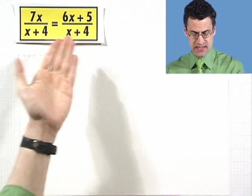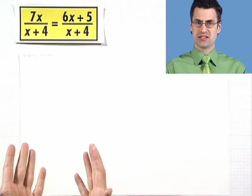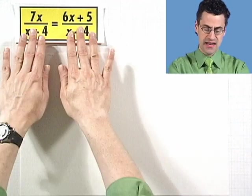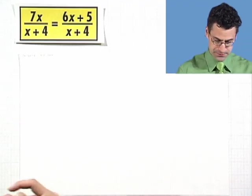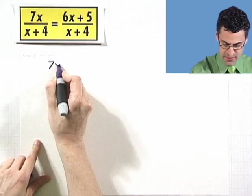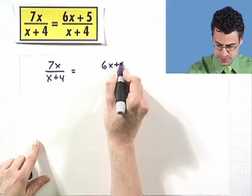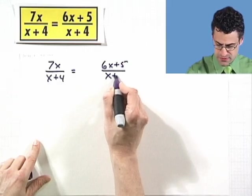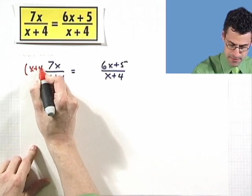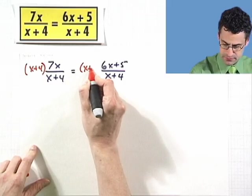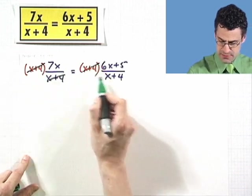We have the exact same denominator on both sides, so if I multiply both sides through by the quantity x plus 4, I can simplify both sides and actually have a denominator of just 1. So I start off with 7x over x plus 4, which equals 6x plus 5 over x plus 4, and now I'm going to multiply both sides by x plus 4.